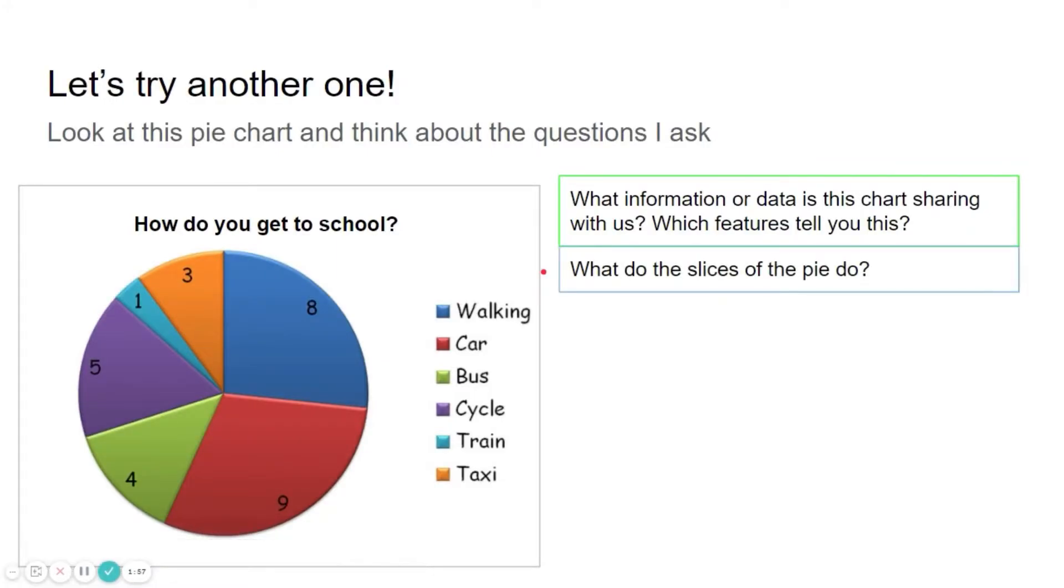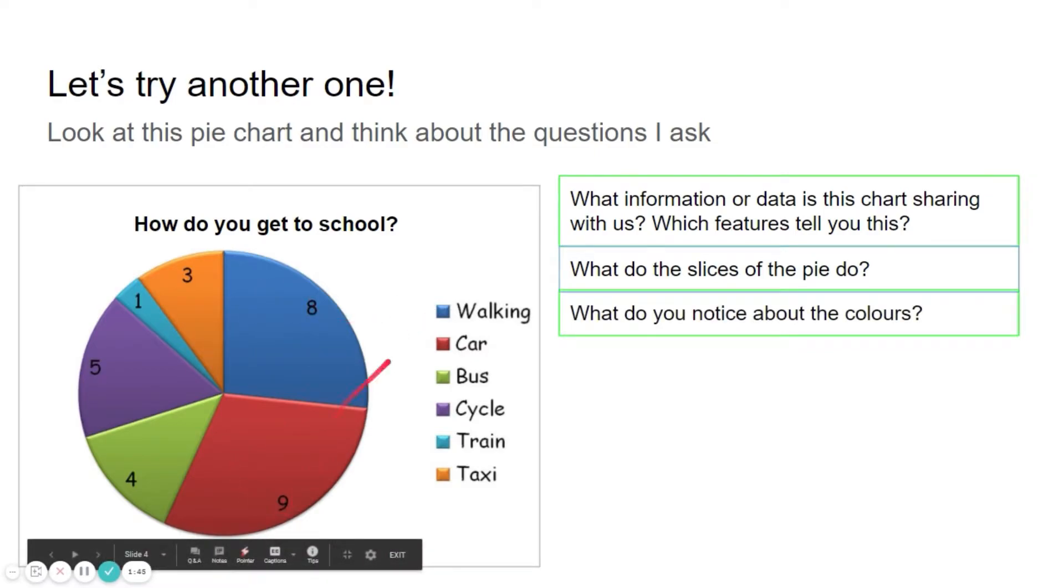What do the slices of the pie do? Well, the slices of the pie tell us how much of something there has been chosen. And some of them are bigger, some of them are smaller. So it's quite easy to pick out which one is the most popular or which one was the least popular in this case. What do you notice about the colours? Well, the colours match the colours in the key there. So blue is walking, red is car, green is bus.